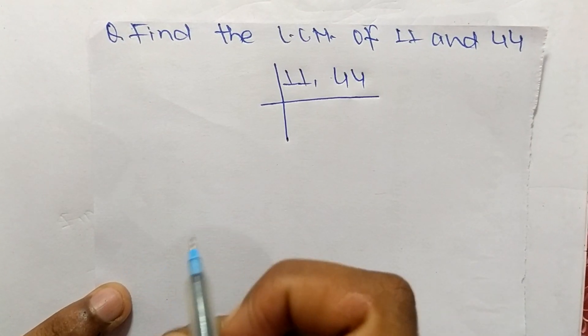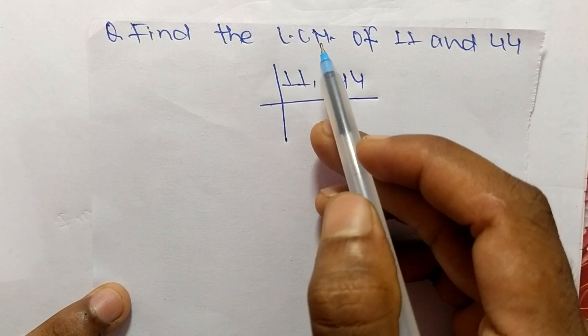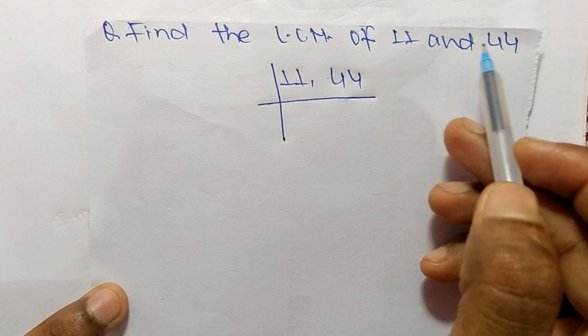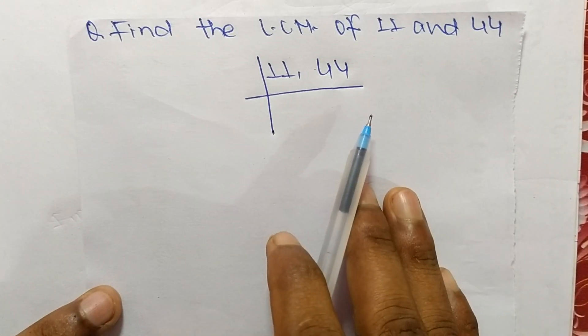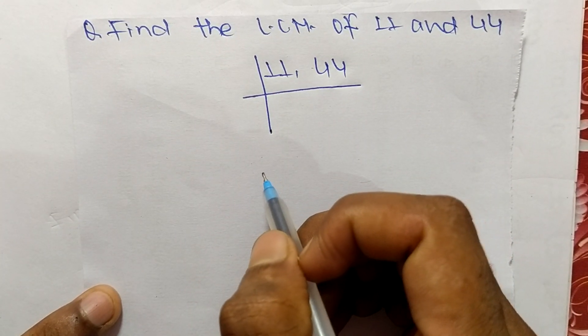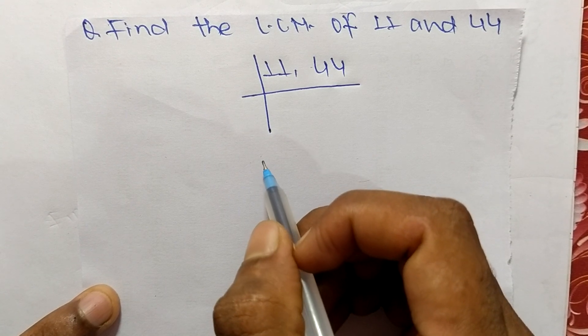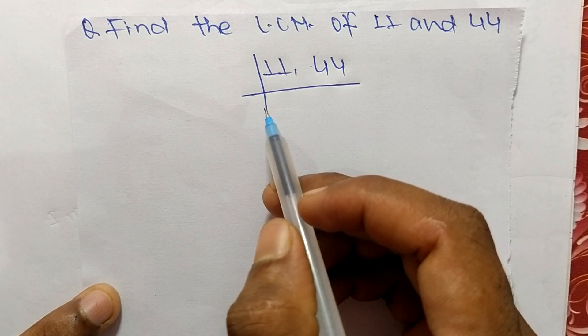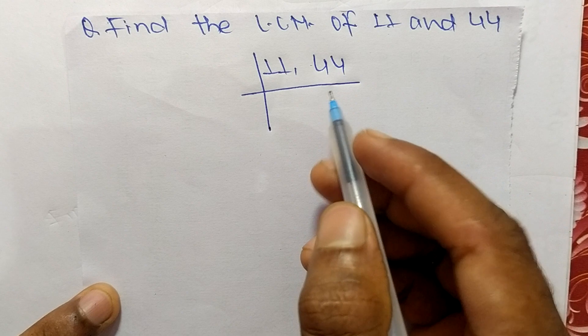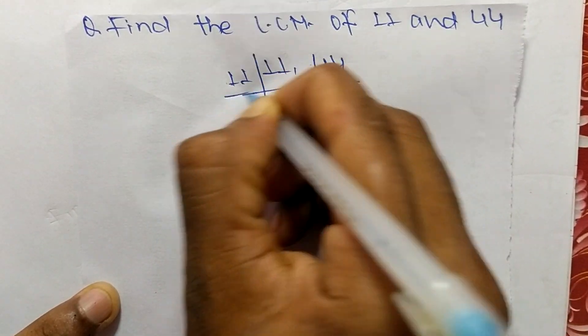So today in this video we shall learn to find the LCM of 11 and 44. To find LCM, first we have to choose the lowest number which can exactly divide 11 and 44, and we take here 11.